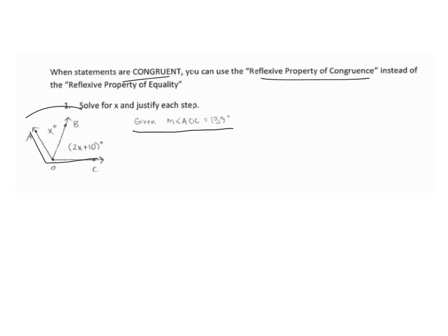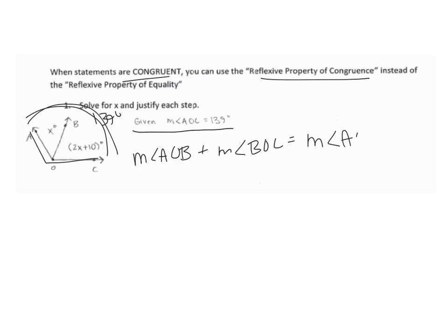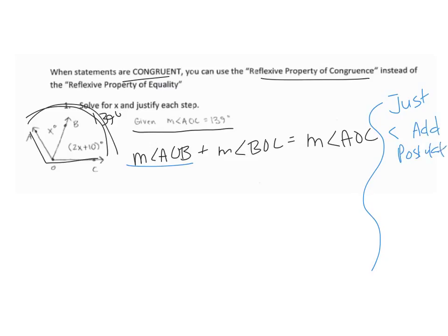Angle AOC, the big angle, is 139 degrees. So I know that the measure of angle AOB plus the measure of angle BOC has to equal the entire thing, which is the measure of angle AOC. You need to write the M's for measures — you can't just say angle AOB plus angle BOC equals angle AOC. The justification here is the angle addition postulate.